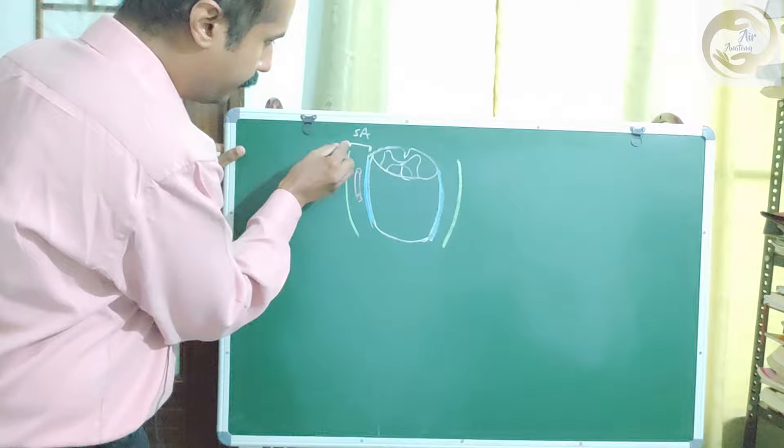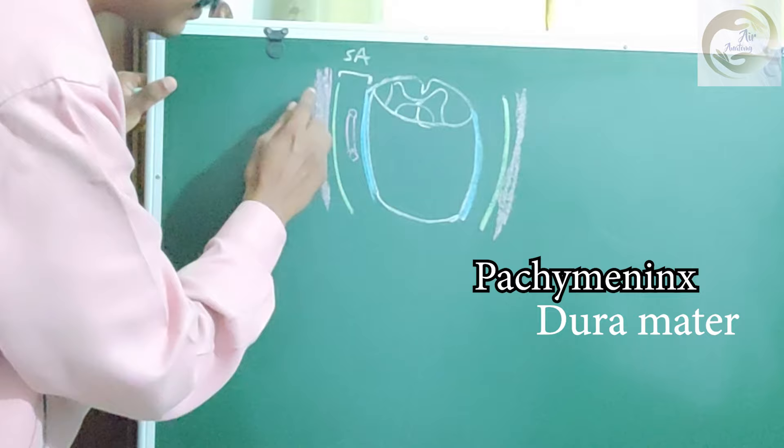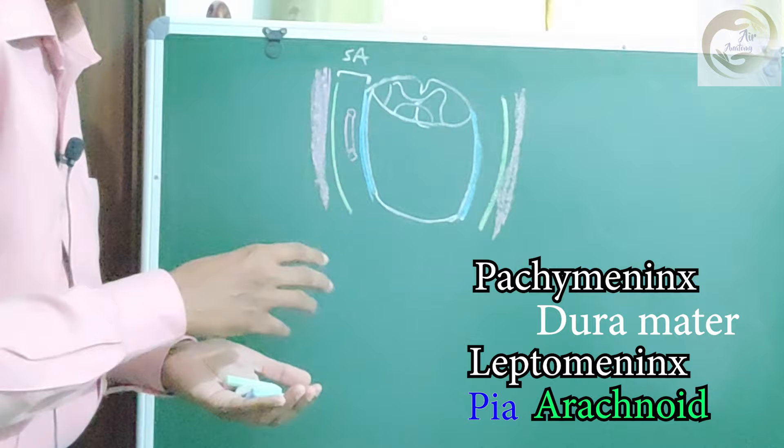Outside the arachnoid, you have a thick fibrous layer called the dura mater. If you remember the division of the meninges: you have the pachymeninges or thicker meninges, which is the dura mater, and leptomeninges or the thinner meninges, which is pia mater and arachnoid mater.